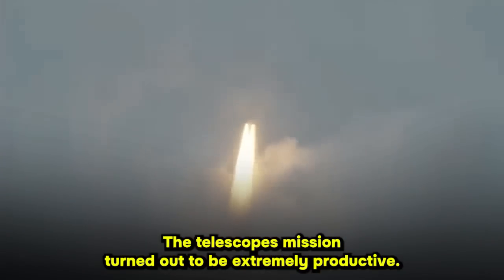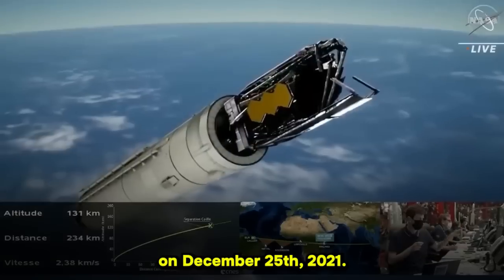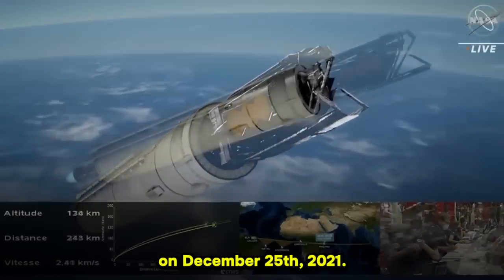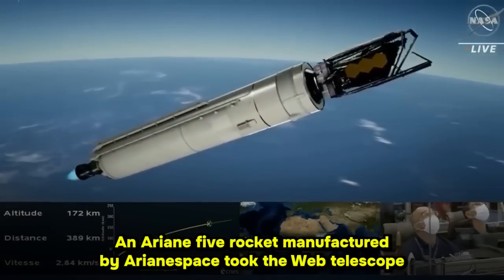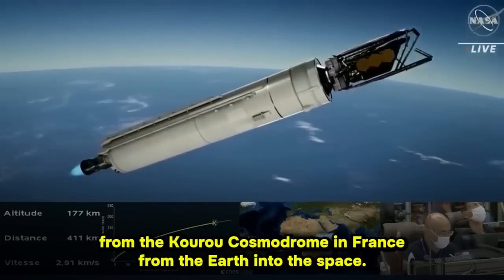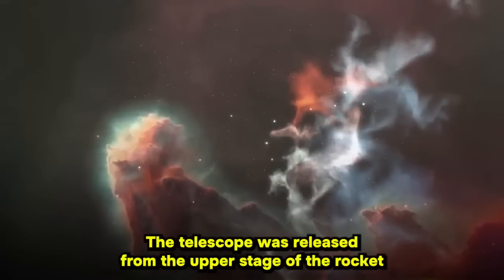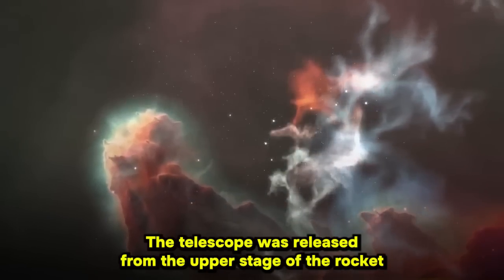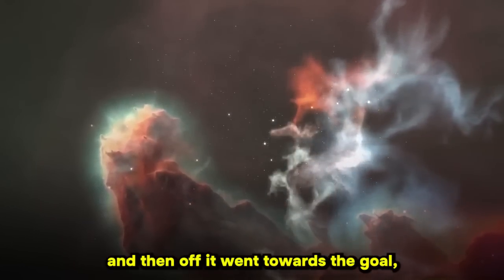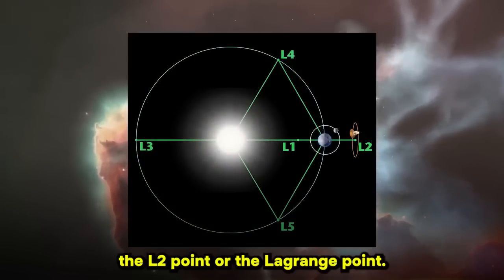The telescope's mission turned out to be extremely productive. At 12:20 p.m. on December 25, 2021, an Ariane 5 rocket manufactured by Ariane Space took the Webb Telescope from the Kourou Cosmodrome in France from the Earth into space. Less than half an hour later, the telescope was released from the upper stage of the rocket. And then off it went towards the goal, the L2 point, or the Lagrange point.